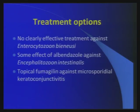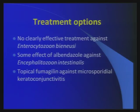For treatment options: for Enterocytozoon bieneusi there is no effective drug. For Encephalitozoon intestinalis, we can use albendazole. Why can we use albendazole? It is an anthelmintic drug — but microsporidia is not a helminth, it is a protozoan. So why can we use albendazole to kill Encephalitozoon? It is not a helminth, it is a protozoan.